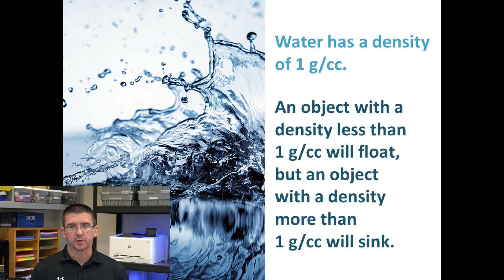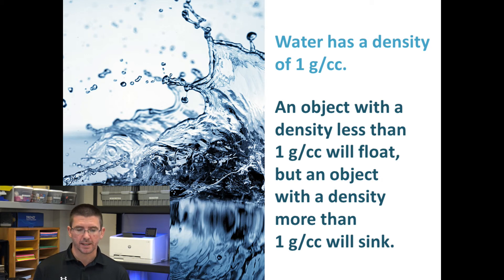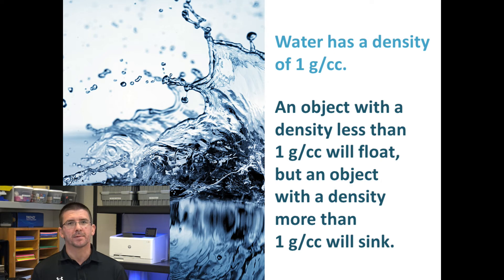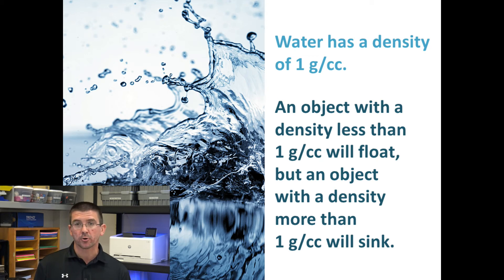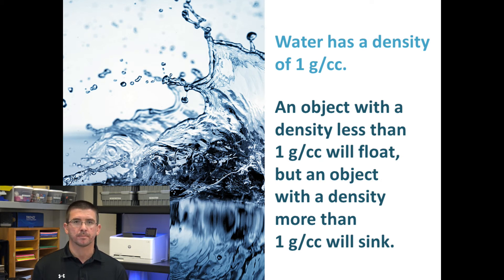Now water, on the other hand, which we use as a standard for density measurement, has a density of 1 gram per cubic centimeter. That means 1 cubic centimeter of water has a mass of 1 gram. Anything with a density greater than 1 gram per cubic centimeter would be more dense than water and it would sink — like the golf ball.